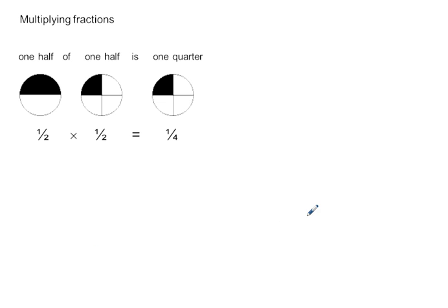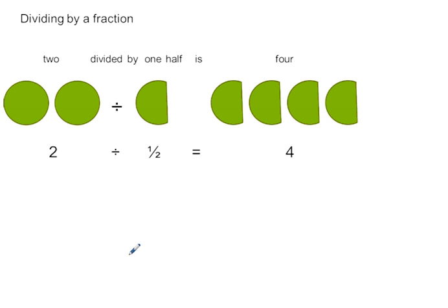Let's see what happens when we multiply fractions. One half of one half is one quarter. So if we do it verbally, one half of a half is going to be a quarter. Dividing by a fraction, two divided by one half, so I'm dividing each of these into half, will give me four. So when we divide by a fraction, your number, your answer, is actually bigger than what you started with.